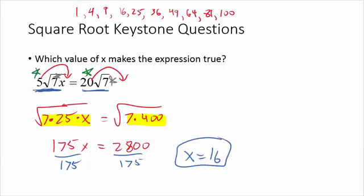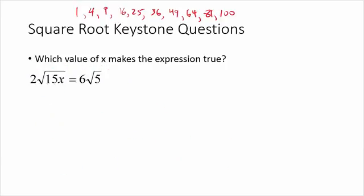It's always a good idea to check your answer. Plug sixteen back in for x, simplify the square root, and you should get twenty on the outside. Pulling the sixteen out gives a four, and that four times the original five gives us twenty. That confirms x equals 16 is correct.